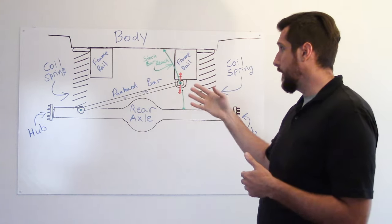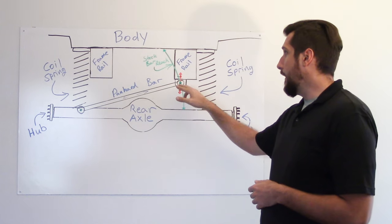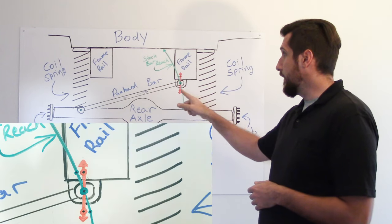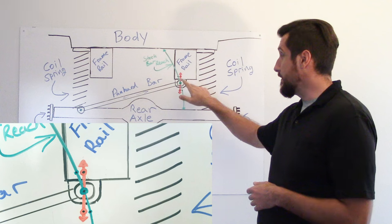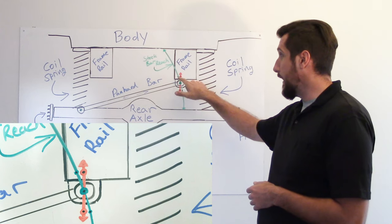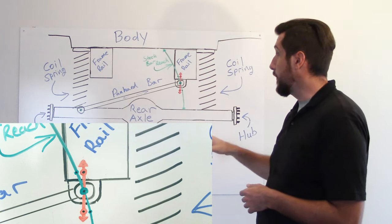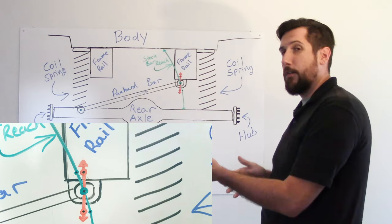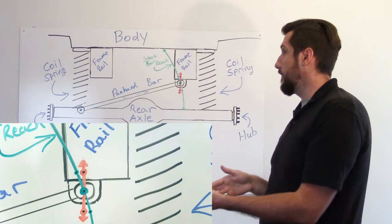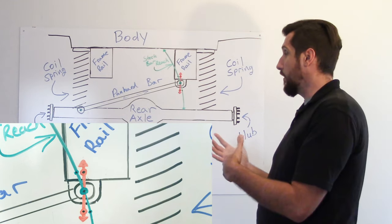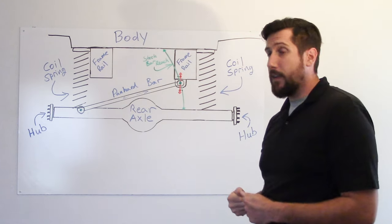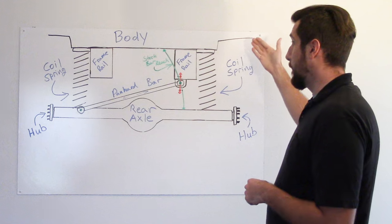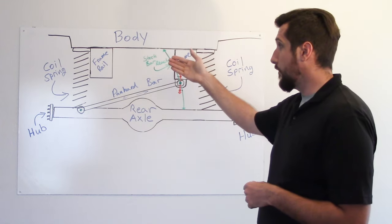And then you can see, when I try to reinstall the panhard bar, that now the panhard bar doesn't reach because the distance between these two points, this green dot with the black in the middle and the red dot with the black in the middle. When we go up to that new ride height, you can see that the panhard bar doesn't reach far enough anymore to mount into the frame rail hole.